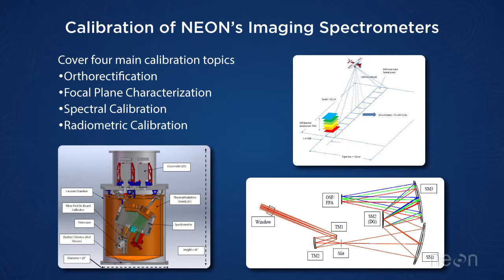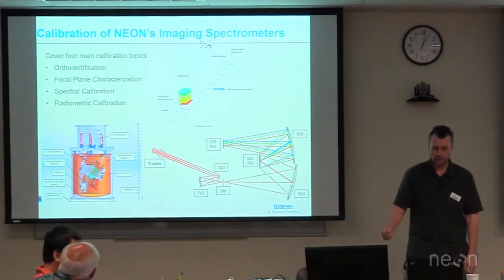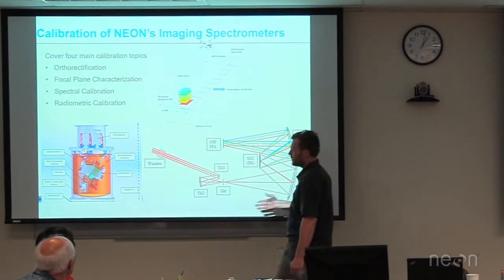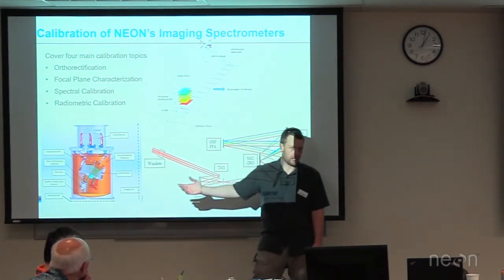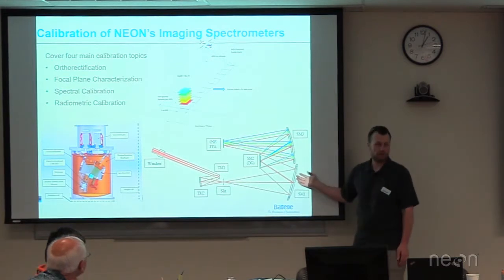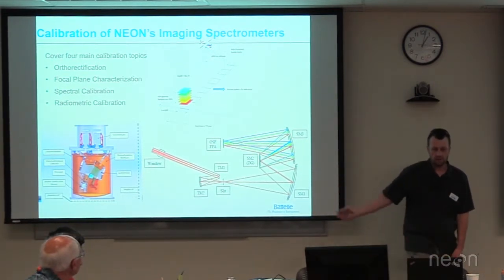In this talk I'm going to cover four main topics at a high level since we only have half an hour. We'll start with orthorectification or geolocation — how do we get the pixels where they're supposed to be. Then focal plane characterization, the sensor inside the imaging spectrometer that actually collects the light. Then spectral calibration and radiometric calibration — what wavelengths get where on that detector and how much of those wavelengths reach those detector units. This slide shows a few different items in our imaging spectrometer; this is the optical path inside our sensor, just as a reference.